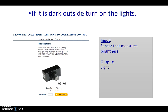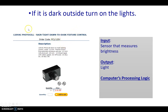So what is the processing logic here? We want to take the plain English statement and decipher what the processing logic would be if we were a computer. The processing logic relates the input — the sensor that measures brightness — to the output, which is the light. If we write it in the form of an expression, the computer's processing logic would be: light equals not bright. This means the output light is turned on if it is not bright outside.